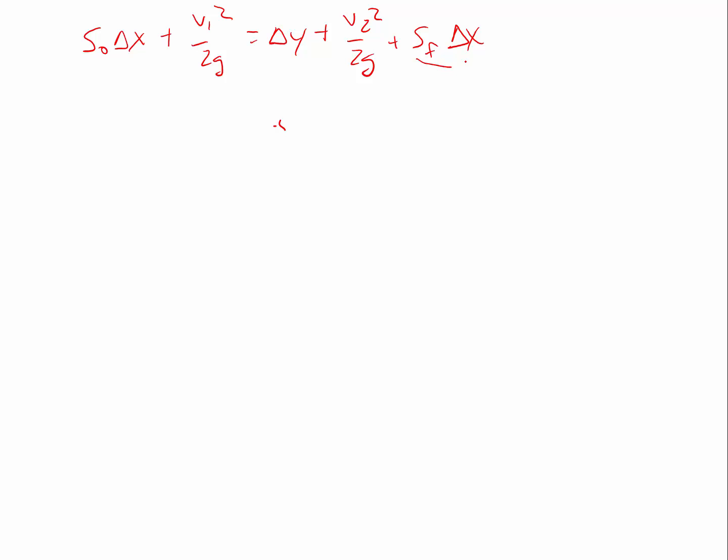I'm just going to reproduce my equation there: s sub o delta x plus v1 squared over 2g equals delta y plus v2 squared over 2g plus s sub f times delta x. If you're looking through this, you recognize that that's the head loss due to friction, and we can go through and solve this.